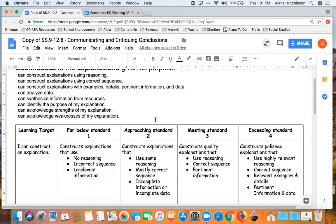So I asked myself, if the student was almost proficient, what would they be able to do in regards to this learning target? And I thought, well, they can use some reasoning. And again, it might not all be correct reasoning. They are mostly correct in the sequence of their explanation, but the information might be incomplete.